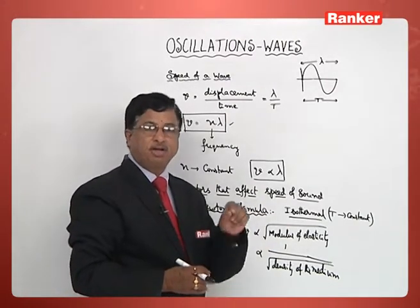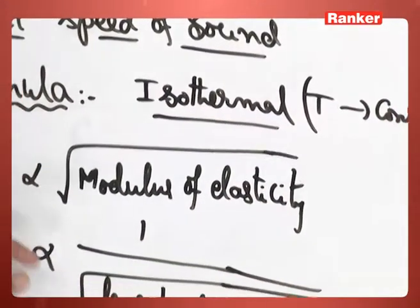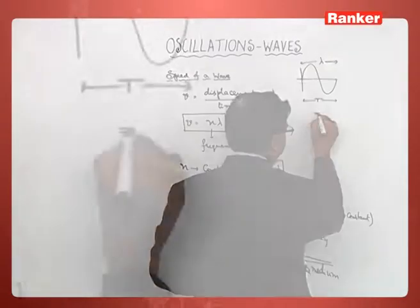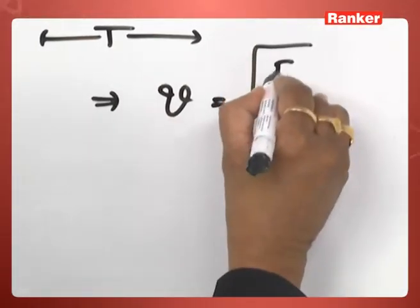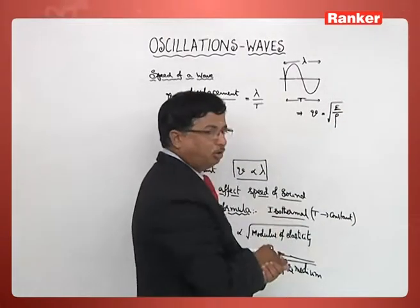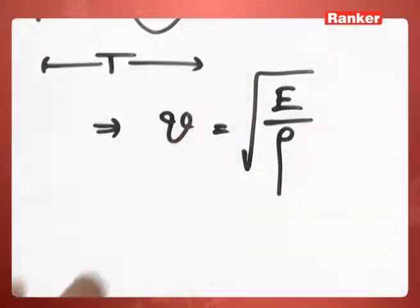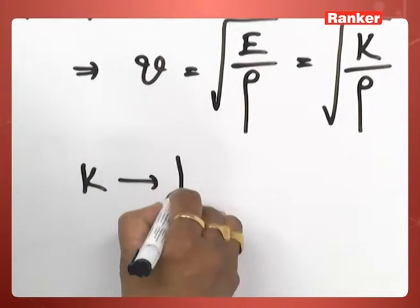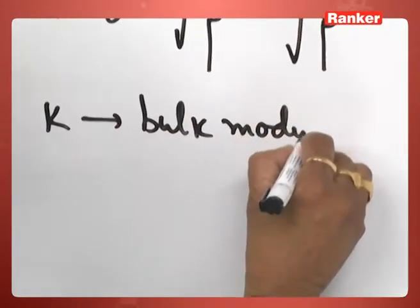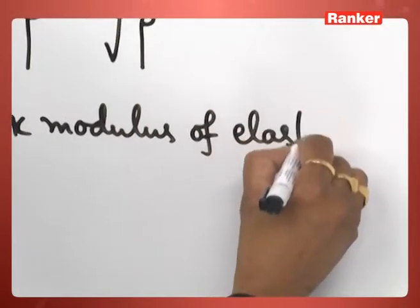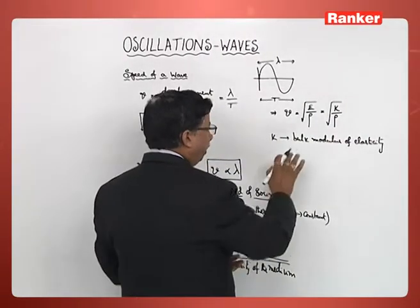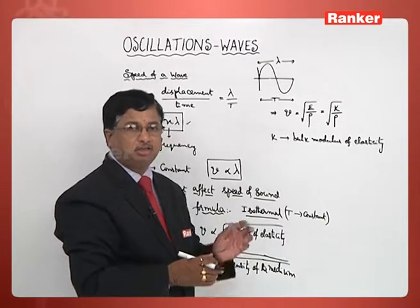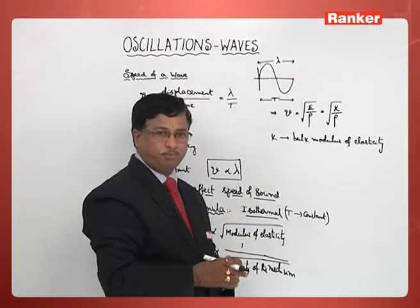In other words, for an isothermal medium, this is the case on which the speed of sound depends. If I generalize that equation, I can write V is equal to under root E by rho, where E is the modulus of elasticity. Suppose if I consider a gaseous medium, I can rewrite the same as under root K by rho. What is K? That is what we call the bulk modulus of elasticity of that gaseous medium. So we can write V is equal to under root K by rho. But in general, in an isothermal medium.